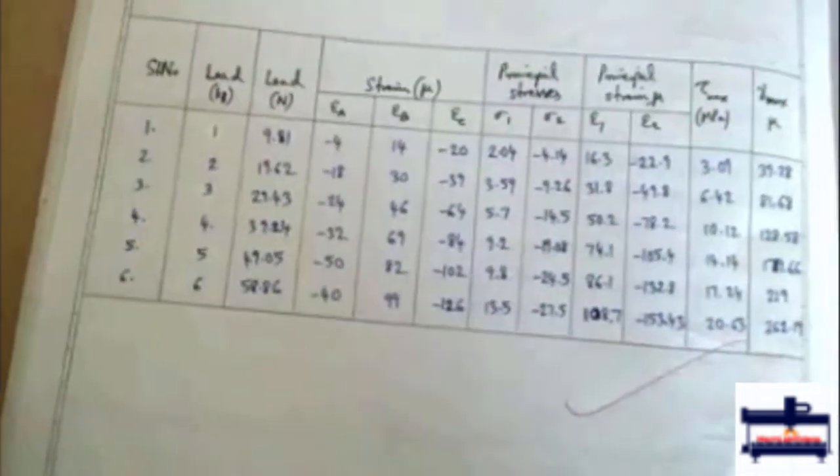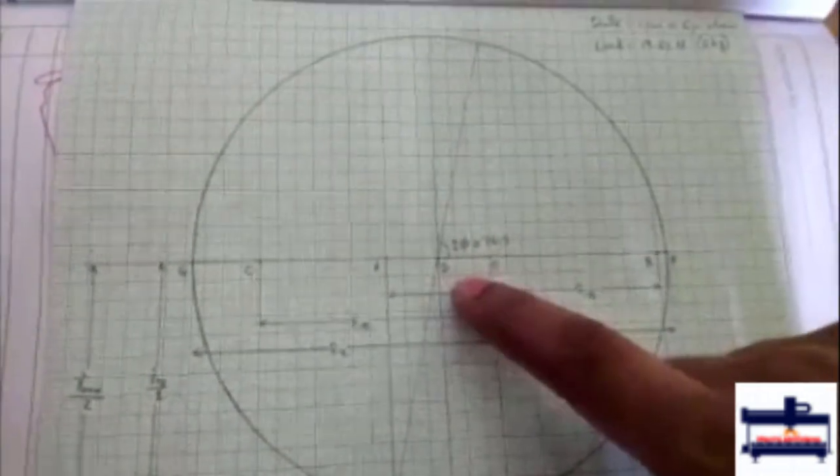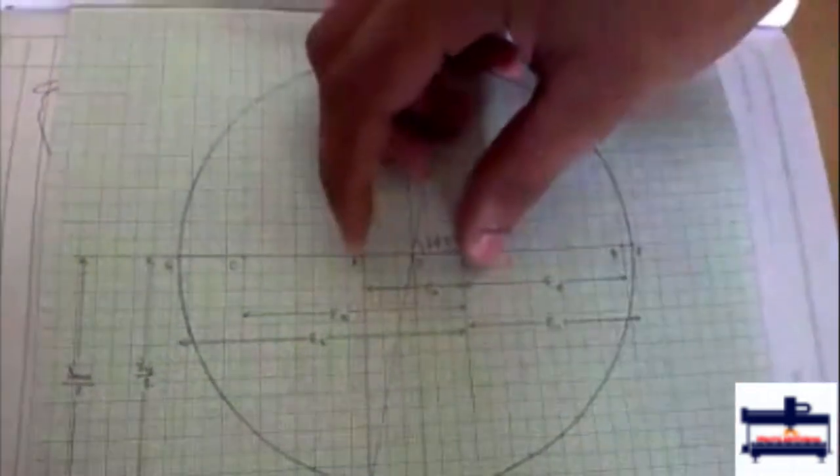Now here in this setup since we get epsilon a and c as always negative, we will get epsilon a plus epsilon b plus epsilon c by 3 also as negative. So in the negative x direction we draw OD.